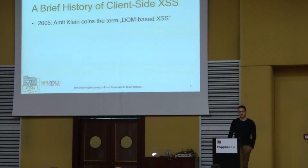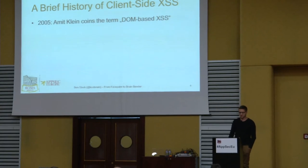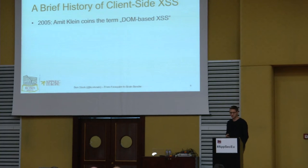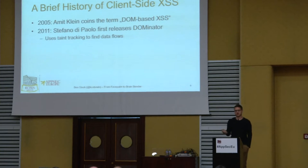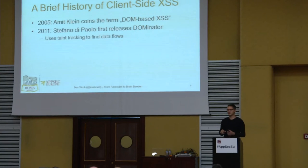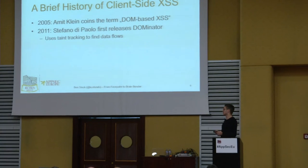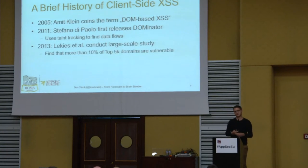A brief history: the term DOM-based cross-site scripting was first coined by Amit Klein in 2005. He called it cross-site scripting of the third kind, since beforehand people only knew reflected and persisted cross-site scripting on the server side. In 2011, Stefano released his tool Dominator, which uses taint tracking to find data flows — intended to help pen testers see which operations were occurring on data flows. We then extended this together with Sebastian to do a large-scale study, patching Chrome to automatically scan the Alexa top 5000 domains, finding vulnerabilities on more than 10% of them.